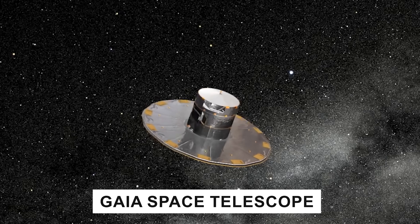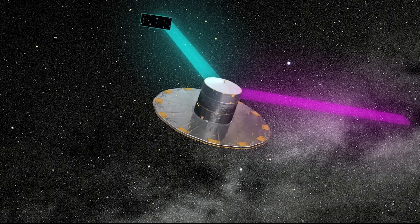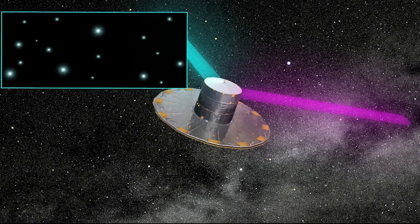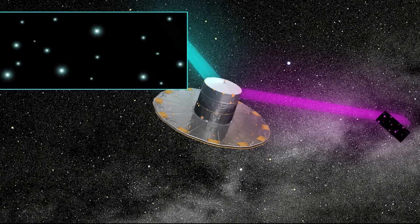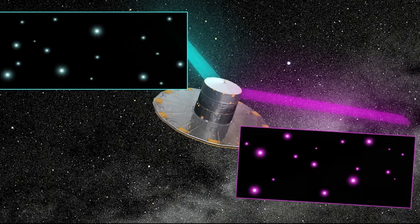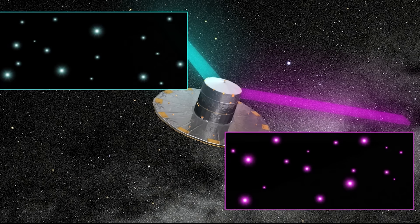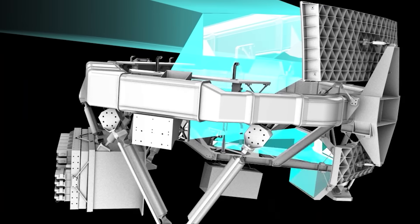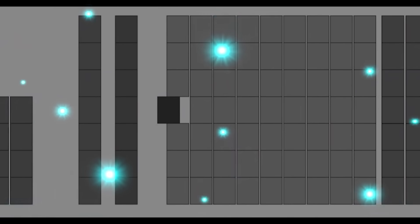Enter the Gaia Space Telescope, a marvel of modern astronomy launched by the European Space Agency in 2013. Gaia meticulously maps the positions and movements of over a billion stars, providing astronomers with a cosmic GPS of unprecedented precision.